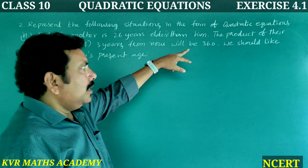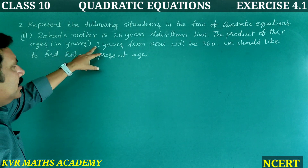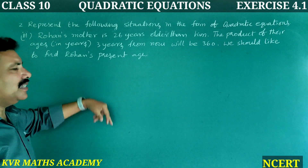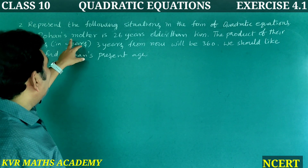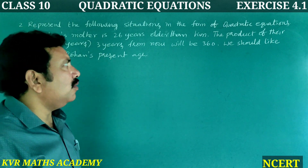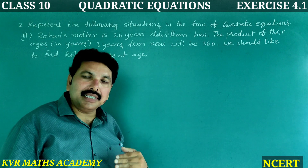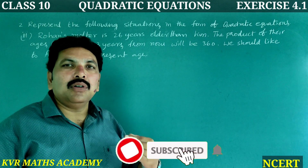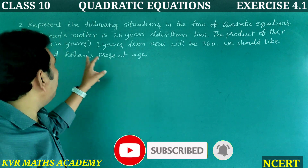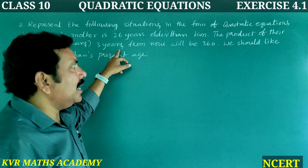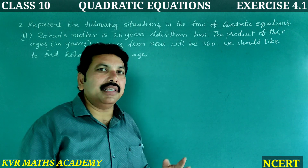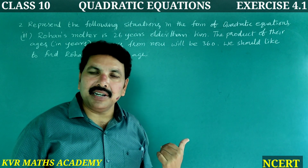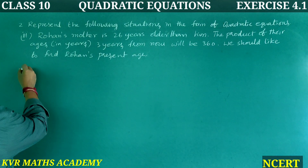Third question: Rohan's mother is 26 years older than him. The product of their ages in years three years from now will be 360. We need to find Rohan's present age. That is why the quadratic equation is introduced.